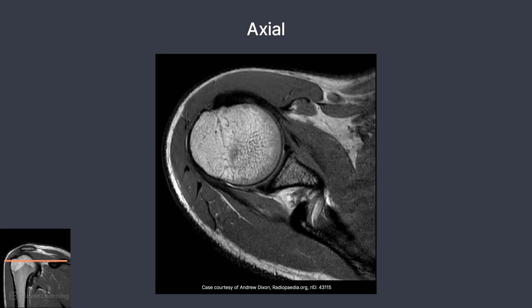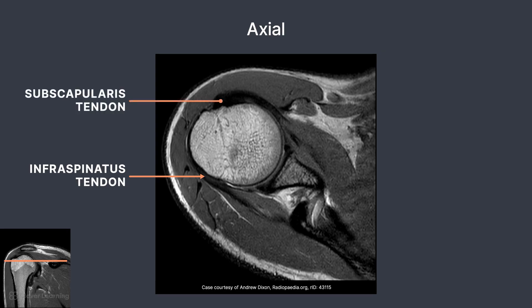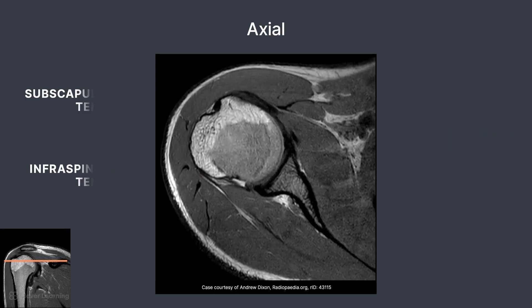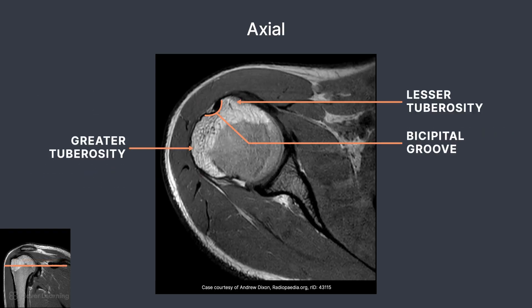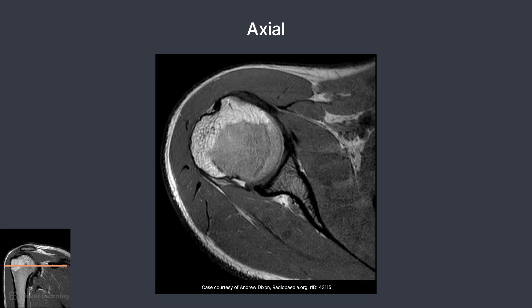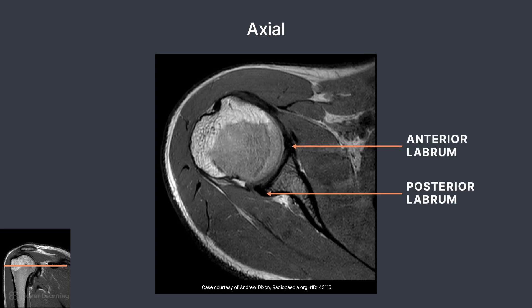Important tendons of the rotator cuff are demonstrated here. On the posterior aspect of the joint, the infraspinatus tendon is demonstrated as a dark line. On the anterior aspect of the joint, the subscapularis tendon is demonstrated wrapping on the front of the humerus. It is important to remember the subscapularis muscle is located between the ribcage and the scapula. The prefix 'sub' means under, so you can remember the subscapularis muscle is located underneath the scapula. Here we see the lesser tuberosity, greater tuberosity, and the bicipital groove. The biceps brachii long head tendon sits in the bicipital groove. On the axial view, we can see the anterior and posterior labrum as darkened triangular areas. Remember, the labrum is a ring of cartilage in the joint space.